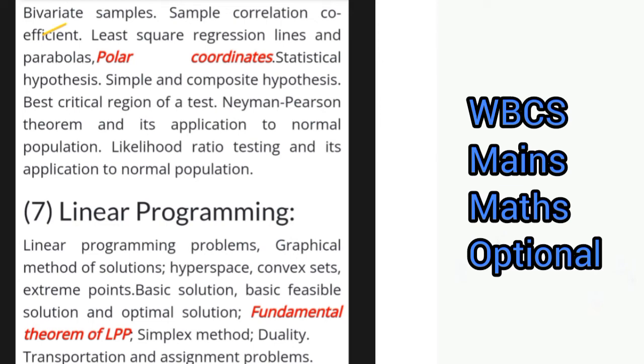Then we have bivariate samples, sample correlation coefficient, least square regression lines and parabolas, statistical hypothesis, simple and composite hypothesis, best critical region of a test, Neyman-Pearson theorem and its application to normal population, and likelihood ratio testing and its application to normal population.